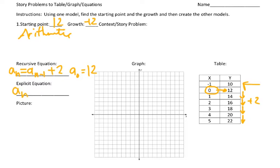For explicit, we can go a sub n, or we can go y equals, or f of x, or any of those, our starting, how it's growing. And then because it's arithmetic and it's repeated addition, we put the n down below.